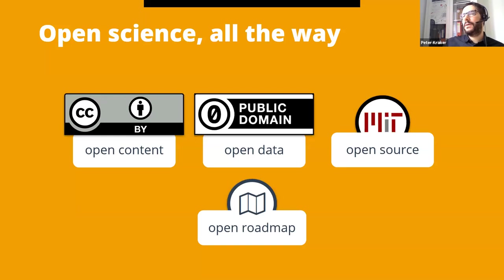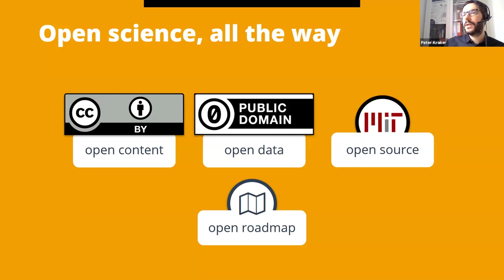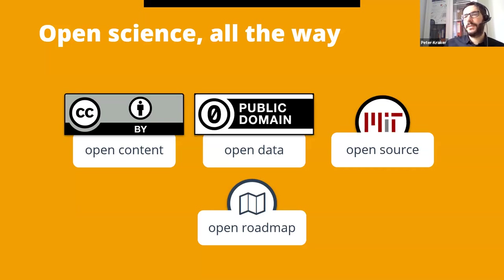We're open science all the way. All our content is CC BY — the maps can be shared, reused, and modified. All our data is in the public domain, including the underlying structures of the knowledge map. We develop all our software open source and release it under an MIT license on GitHub. We're also working towards participatory development, and one step in this direction is that we have an open roadmap that you can all view and comment on.